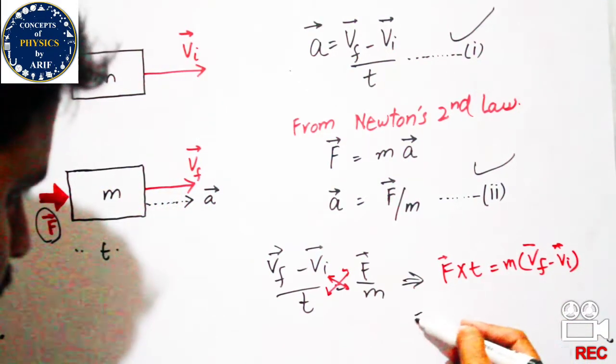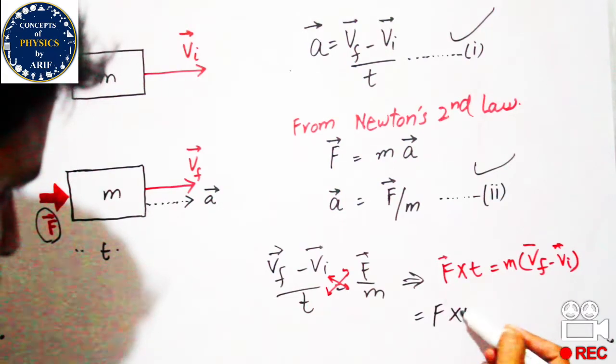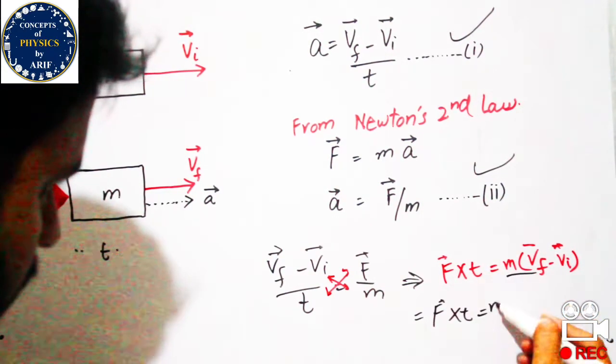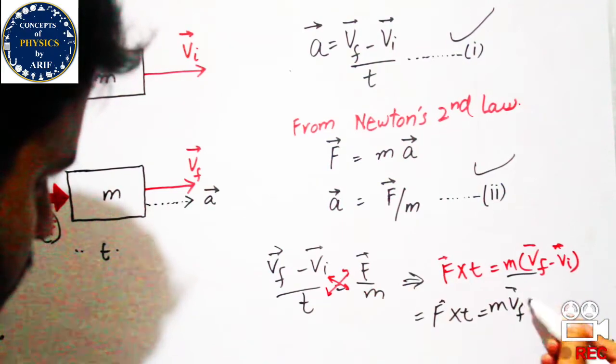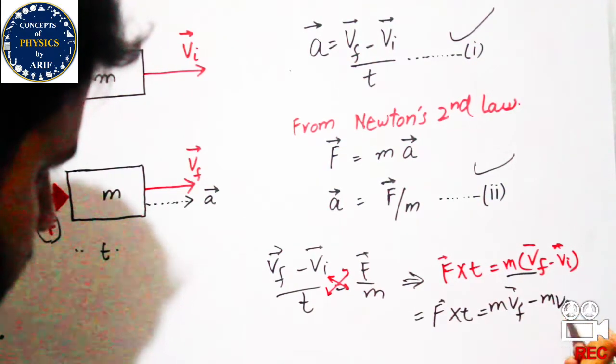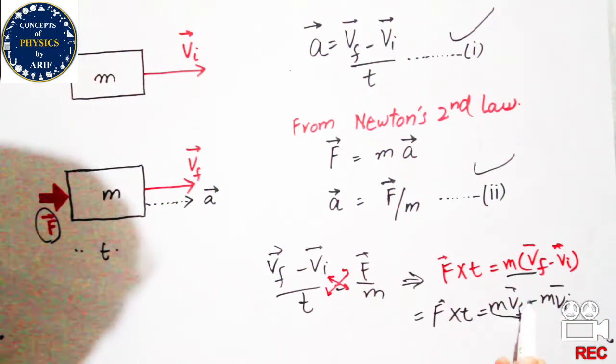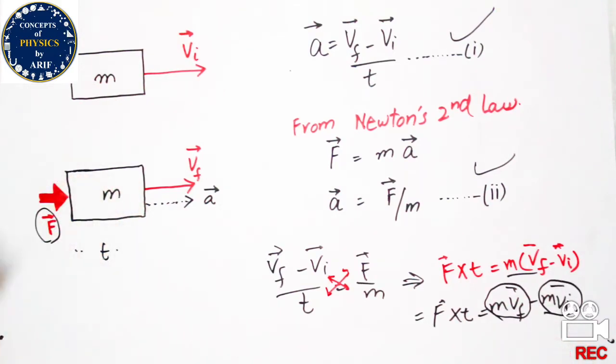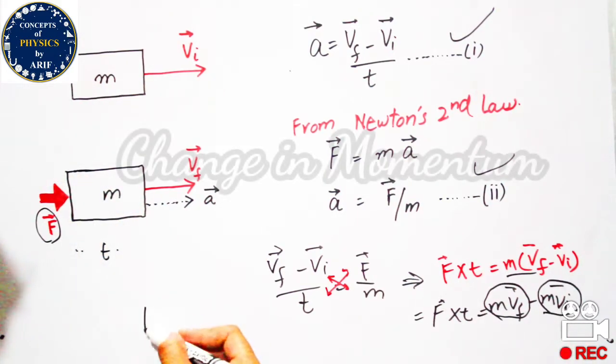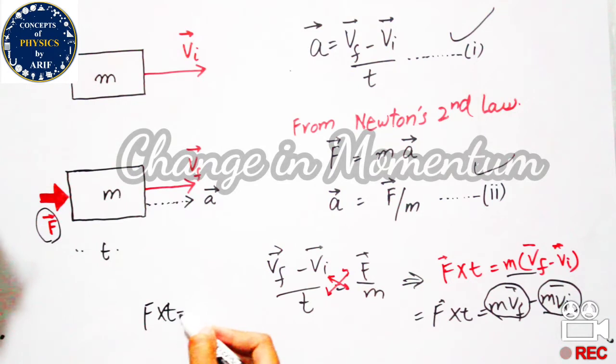From the expression of linear momentum, we can say that mvf is final momentum and mvi is initial momentum. We will write F×t = pf - pi.